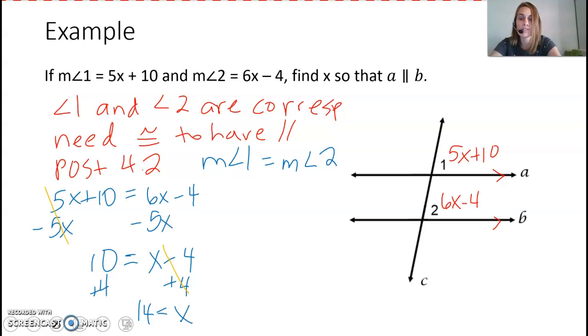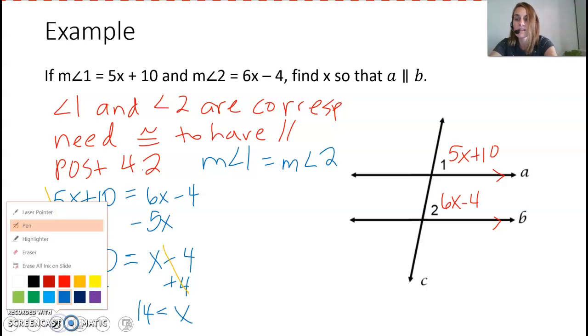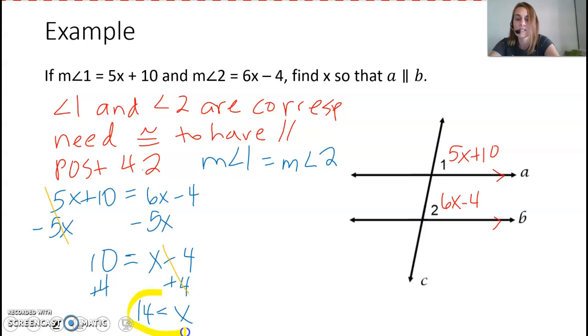And we were supposed to find x so that they're parallel. So we found x. X is equal to 14. That's our final answer. We can double check that x equals 14 makes sense. If we plug 14 into both of those measures that we were given, if we take 5 times 14 and we add 10, 5 times 14, that would be 20, 70. 70 plus 10, and we would get 80.